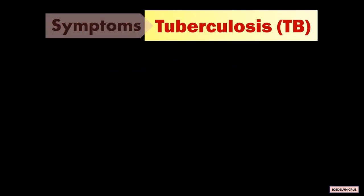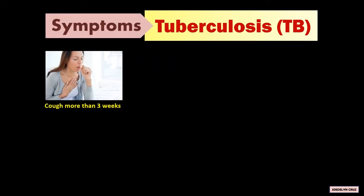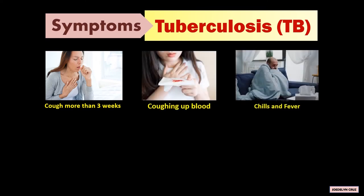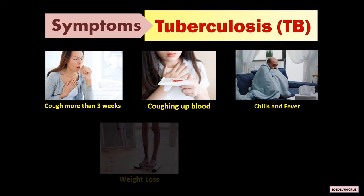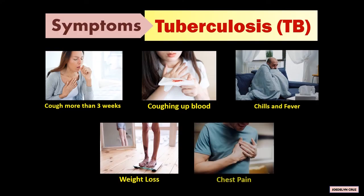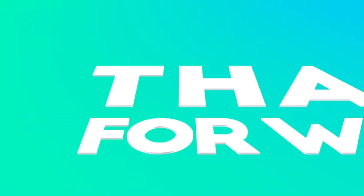The symptoms of TB are a cough that lasts for more than 3 weeks, coughing up blood, chills and fever, weight loss, and chest pain.